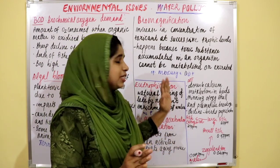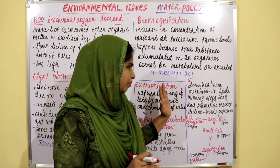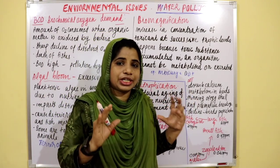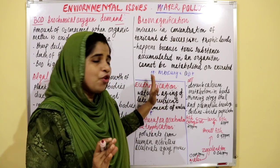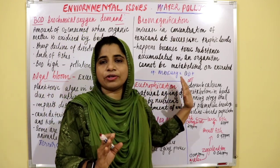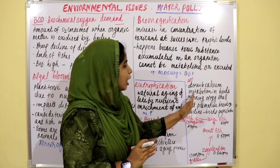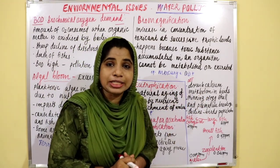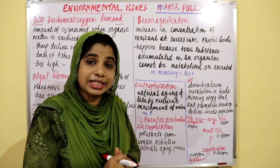For example, DDT shows biomagnification. One effect of DDT accumulation is disturbance of calcium metabolism in birds.